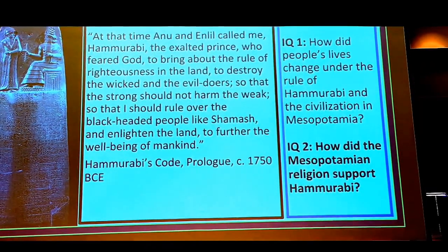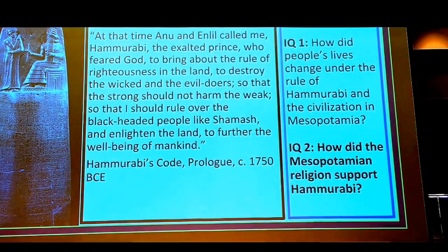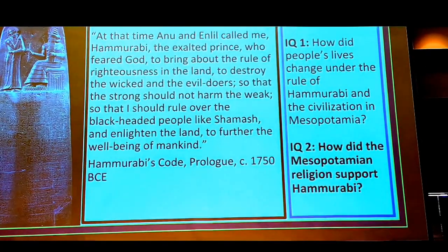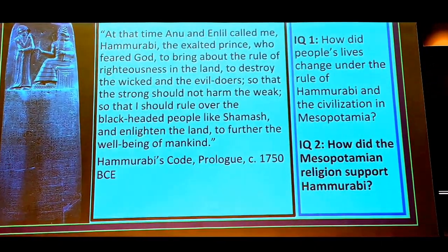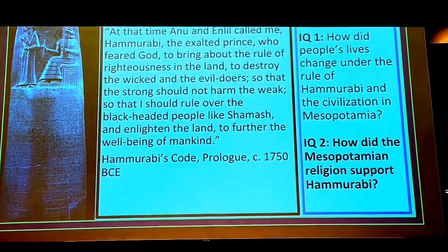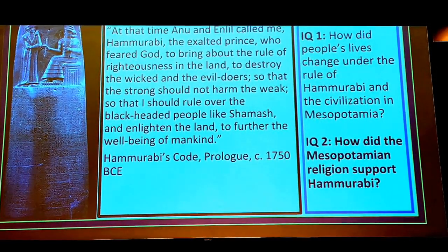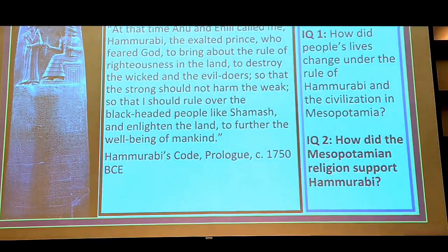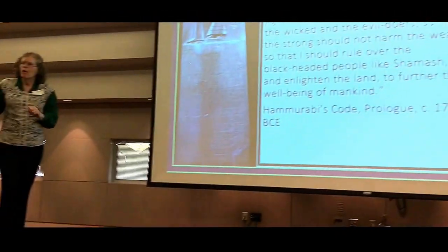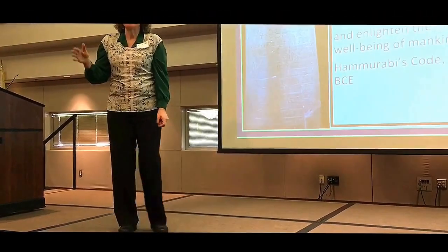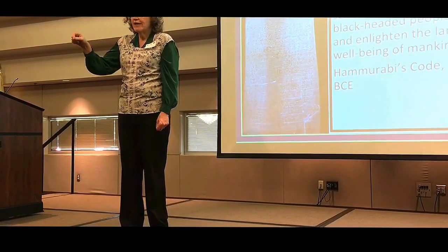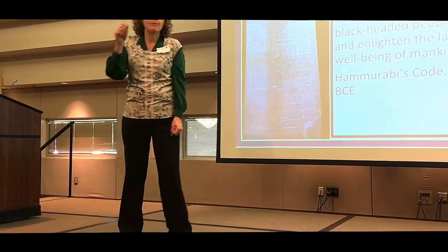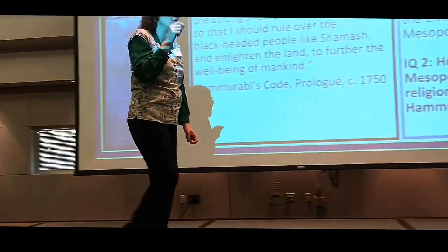I want to point out one thing: this is from the prologue of Hammurabi's Code. We have just one section of a longer reading you would give students. There are three names in here — Anu, Leel, and Shamash — and those are all gods. What I'd like you to do right now is read what the framework says about Hammurabi's Code — just read the vignette, and then we're going to have you do part of it.